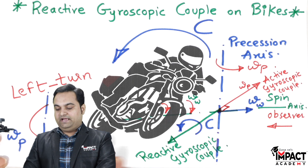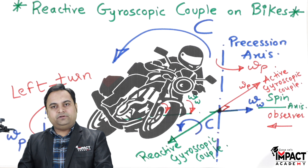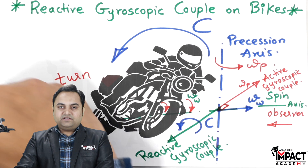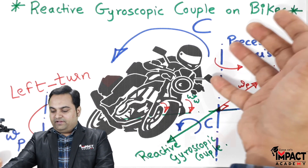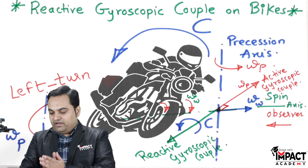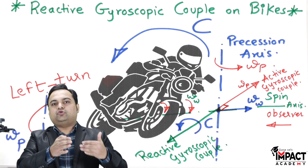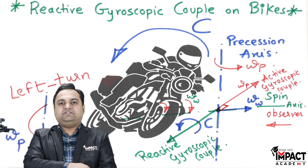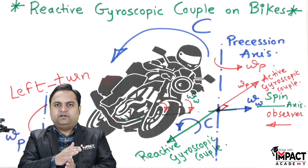This is the effect of the reactive gyroscopic couple. When the biker is taking a left turn, due to the reactive gyroscopic couple acting in this direction, the biker is offered a resistance — he is pushed away from taking the turn. If he is trying to move in the left direction, the reactive gyroscopic couple pushes him in the opposite direction.